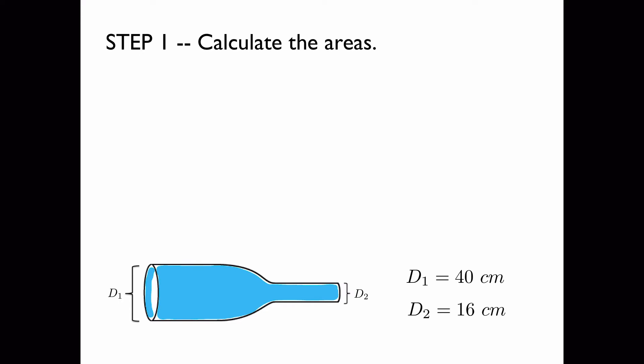Step one is to calculate the areas. Once we know the ratio of the area of the large pipe to the small pipe, we can calculate the new velocity from the old one. So we get the radii of the pipe, which we derive by cutting the diameters in half that are listed in the bottom right hand corner.